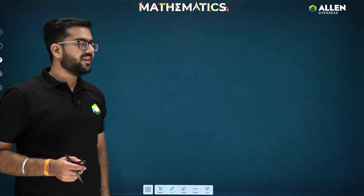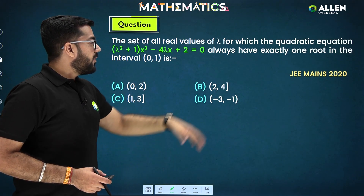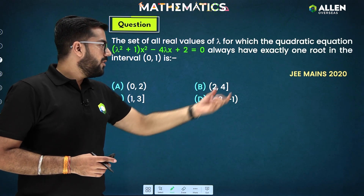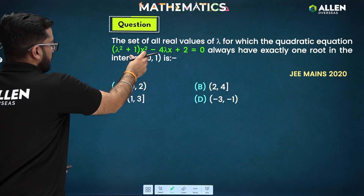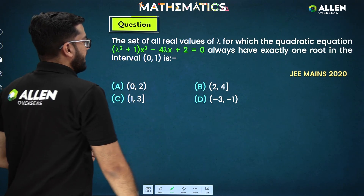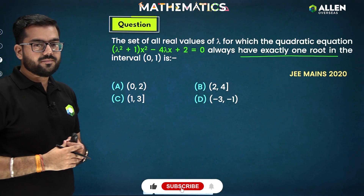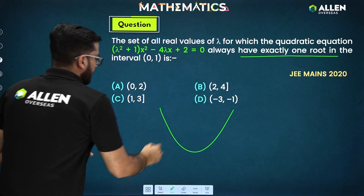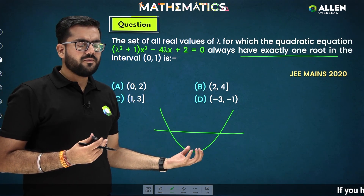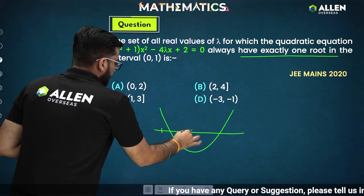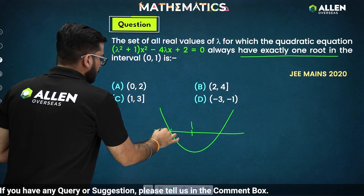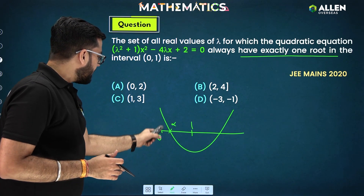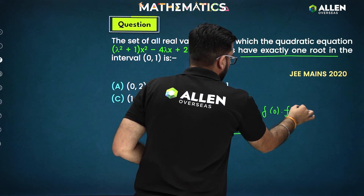Now a previous year question: find the set of all real values of λ for which the quadratic equation always has exactly one root in the interval (0, 1). This is from JEE Mains 2020. We need to visualize the graph. Initially we don't know λ, so we assume a tentative graph: zero is here, one is here, and between them there is one root alpha. In this case, f(0)·f(1) < 0.